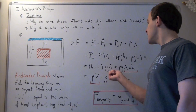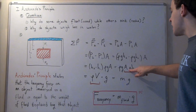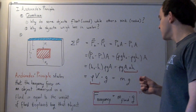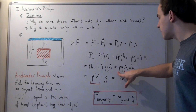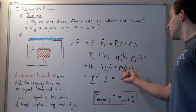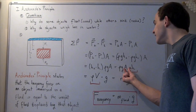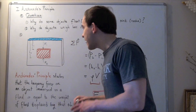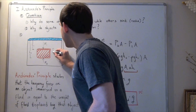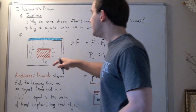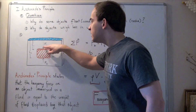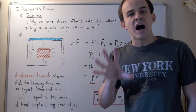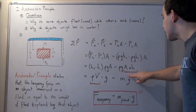Times the area of the face. Now let's factor out the density and G, and we simply get density of fluid times G times area times the quantity H2 minus H1. Now what is area times the change in height? Well, the change in height is simply the height of our block. So if we take the area of this face and multiply by the change in height, we will get the volume of that block.